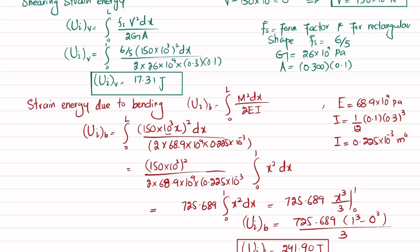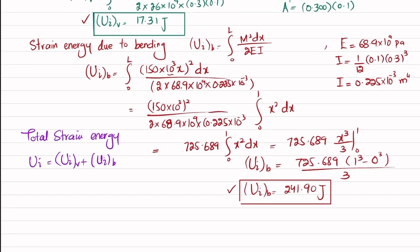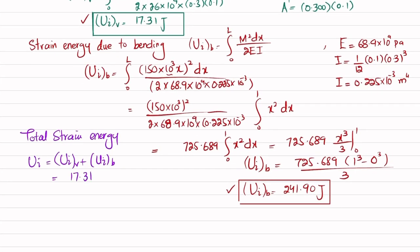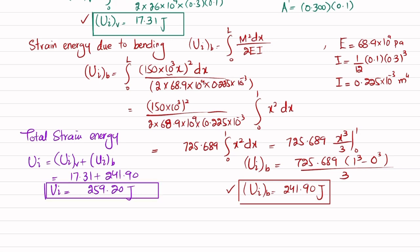The shearing strain energy is 17.31 J and the bending strain energy is 241.90 J. The total strain energy U_i = U_shear + U_bending = 17.31 + 241.90 = 259.20 joules.